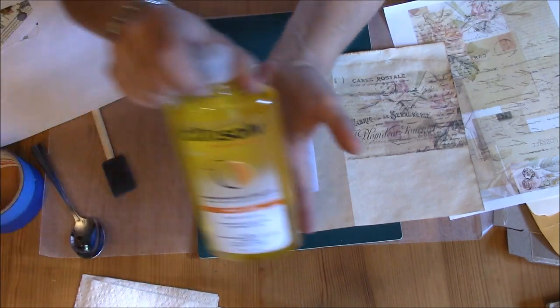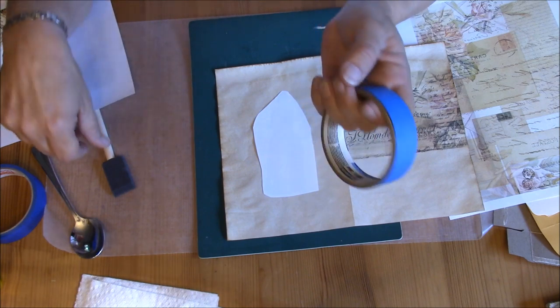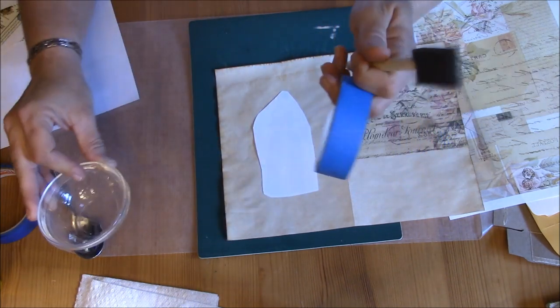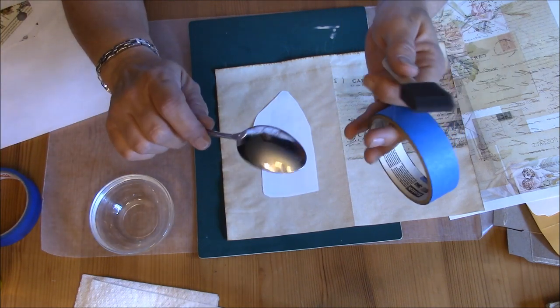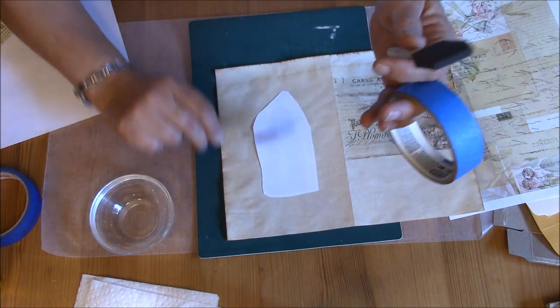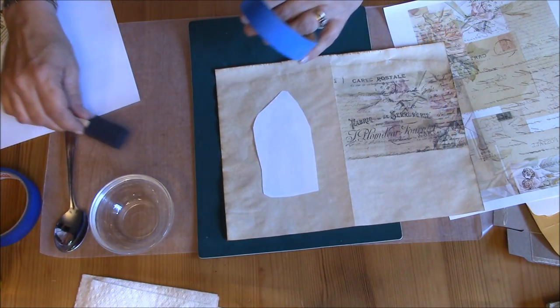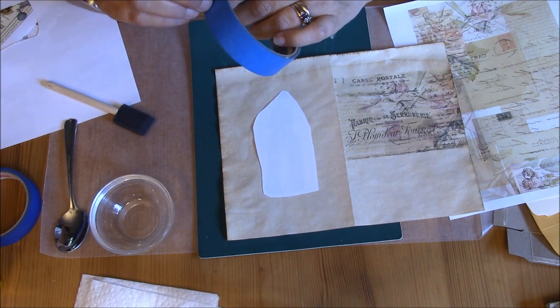You'll need the Citrus Solv obviously, some painter's tape, a foam brush, a little bowl and a spoon or a bone folder or something that you're going to burnish it with. Going from paper to paper, it doesn't take much pressure.